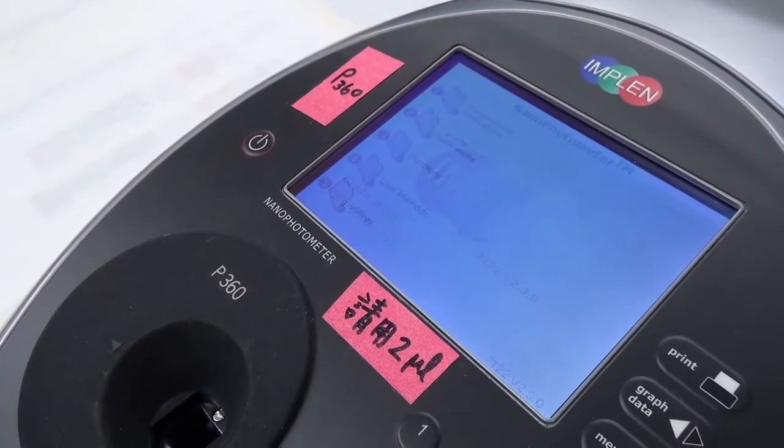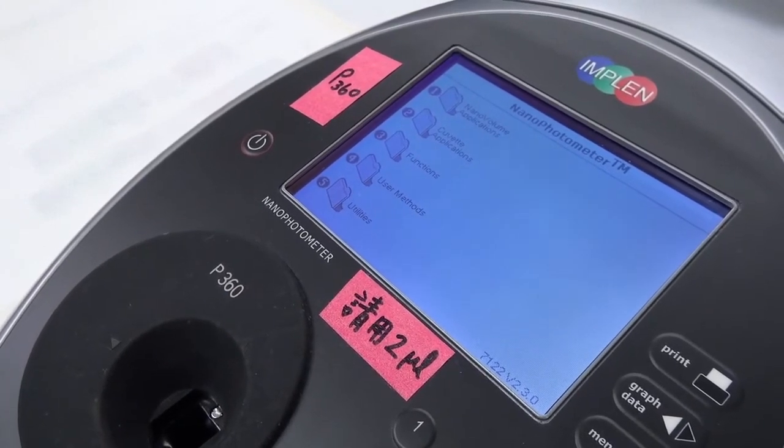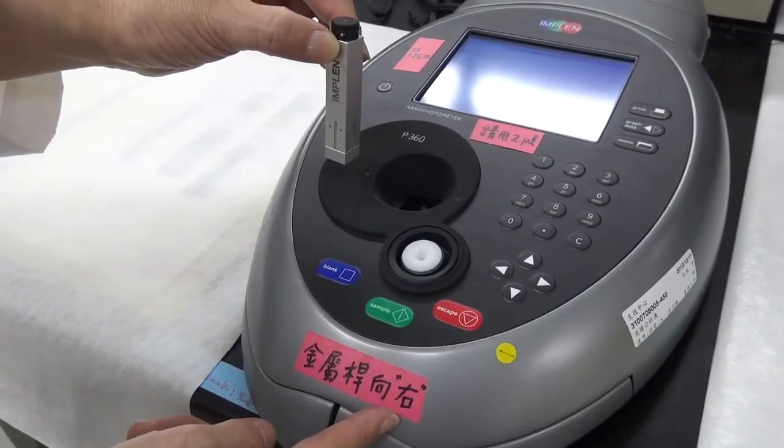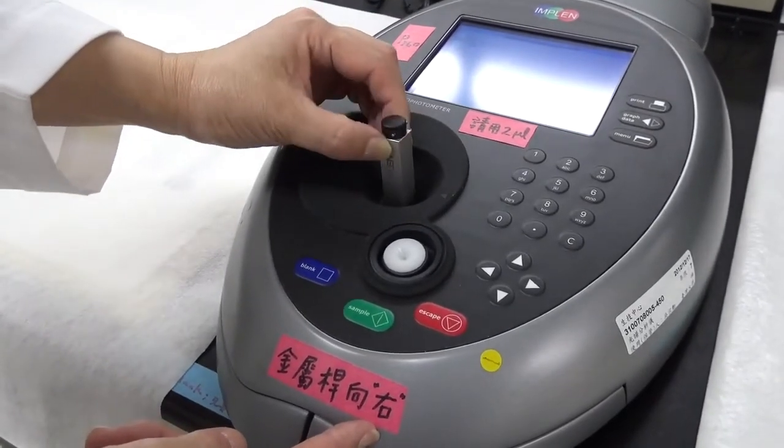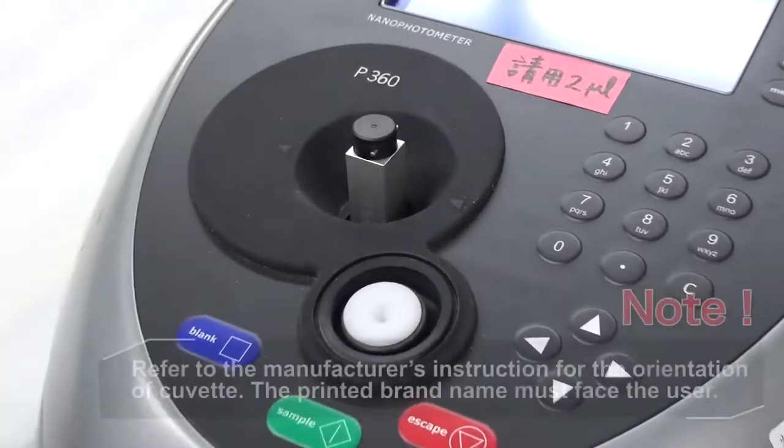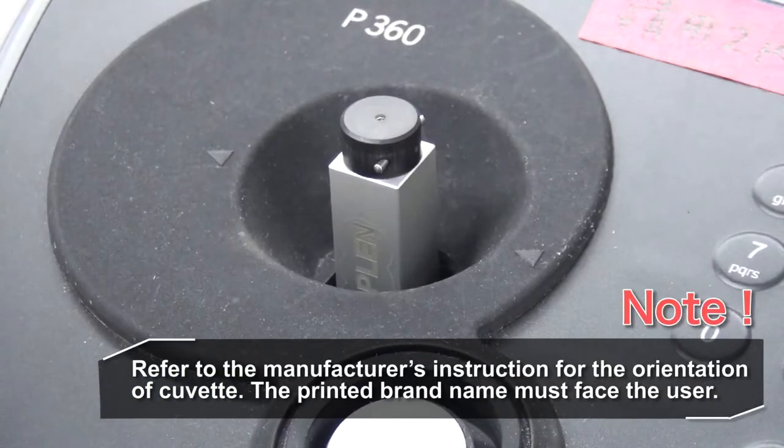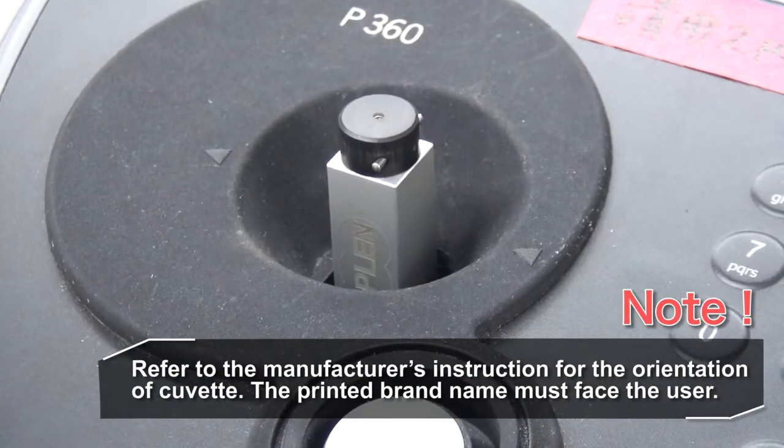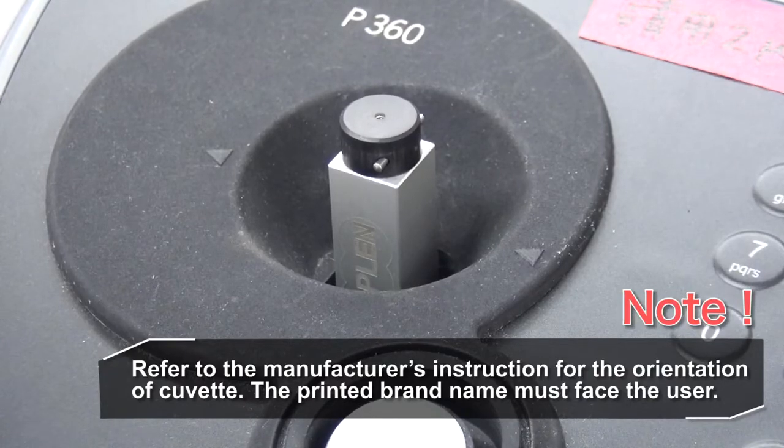3. If the self-test completes successfully, the LCD panel displays the main menu. Put the cuvette into the holder. Note, the light source shines from right to left. The clear side of the cuvette must be perpendicular to the incoming light. Please refer to the manufacturer's instruction for the proper orientation of the horizontal metal bar on the cuvette. The printed brand name must face the user.